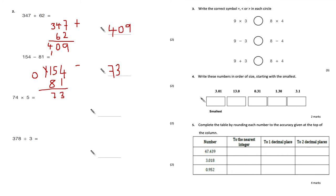Next: 74 times 5 using column multiplication. 4 times 5 is 20, write 0 carry the 2; 7 times 5 is 35, add 2 is 37. The answer is 370.